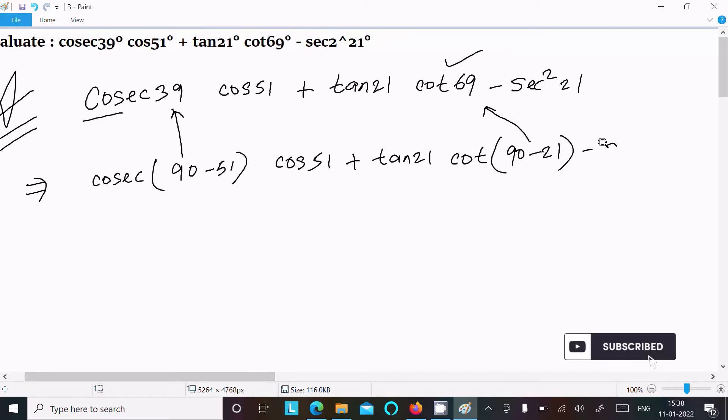And the next is sec² 21°. So cosec(90° - θ) equals sec θ. So here we can write sec 51°.